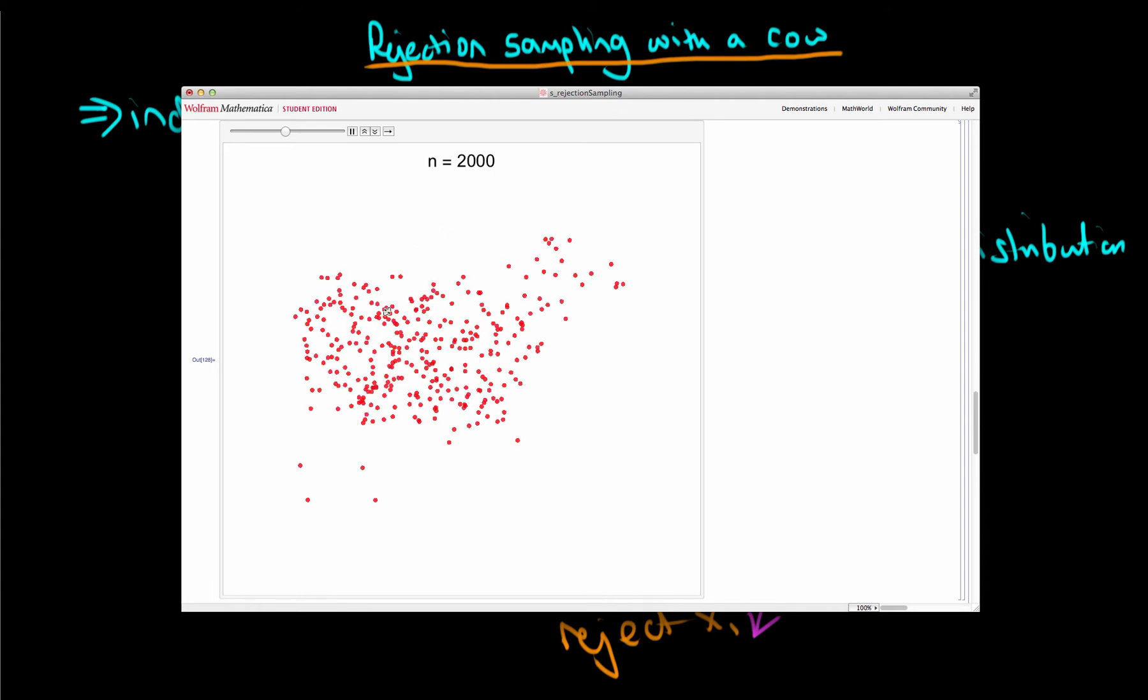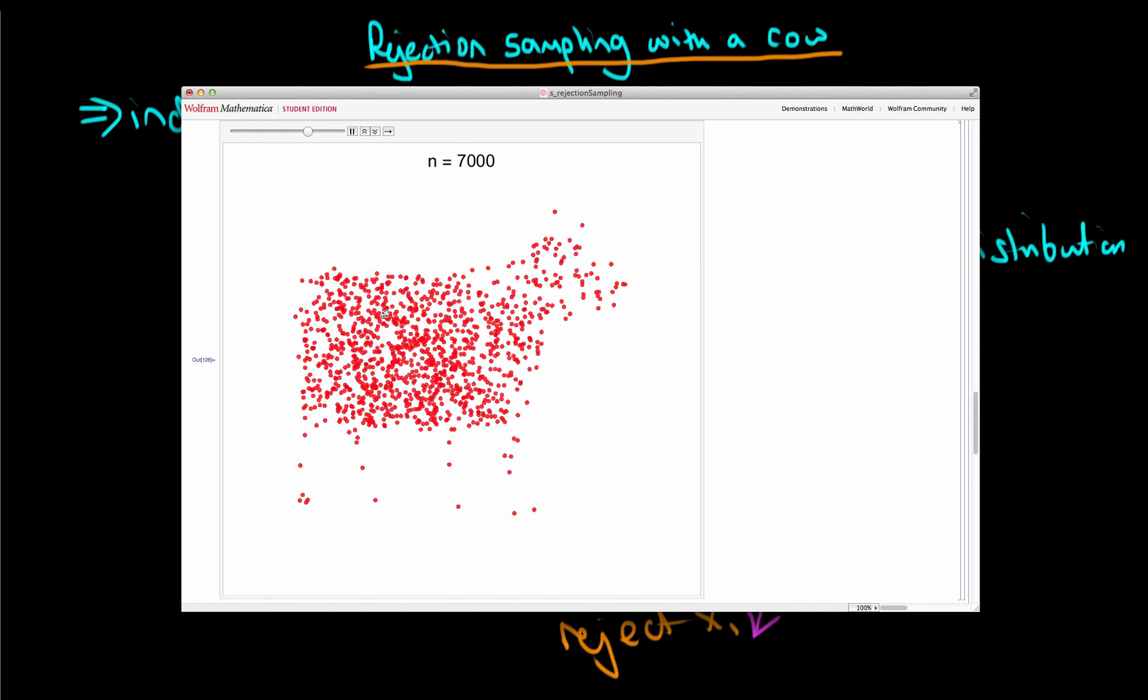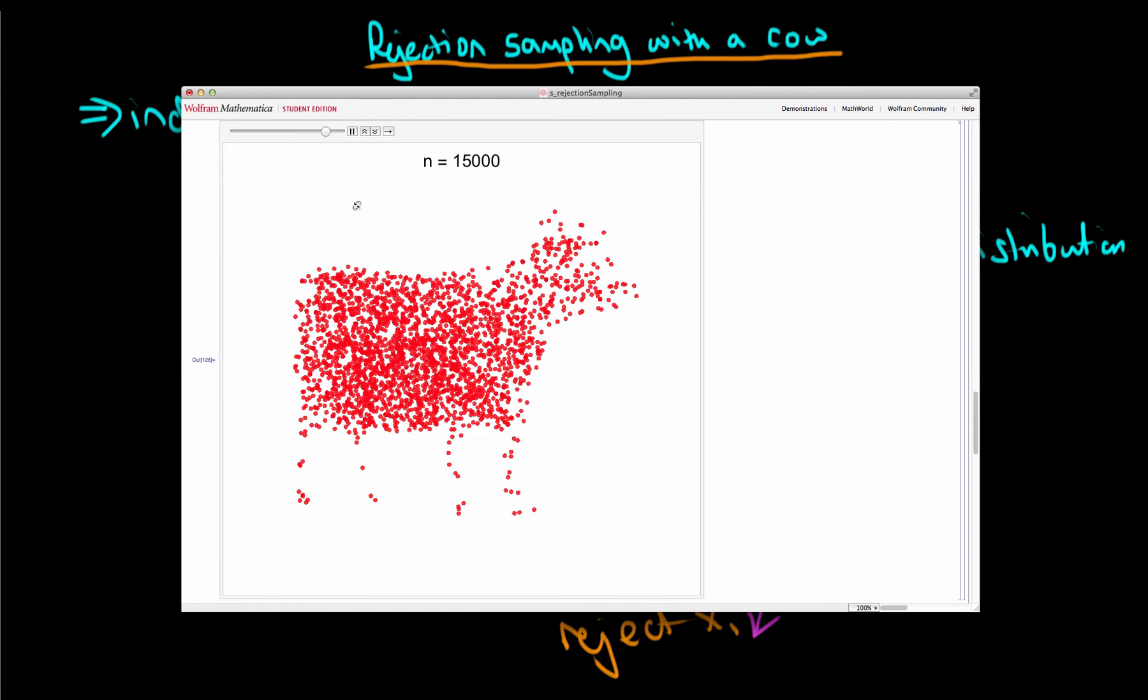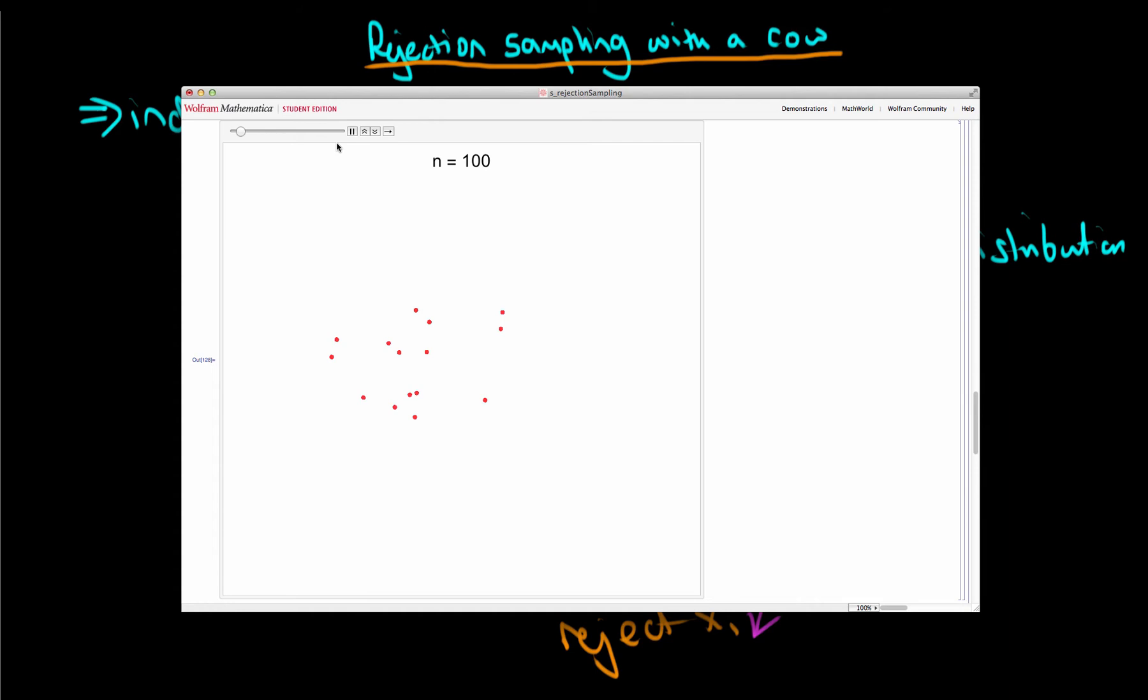But I'm showing here the accepted points that we generate from our cow distribution as red points in the graph. And you can see that after we've generated somewhere around 10,000 points, our distribution, our independent samples, start to trace out a distribution which does look something like a cow.